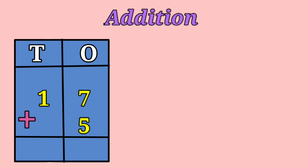Children, which number will stay at 1's place? Number 2 will stay at 1's place. And number 1 will be carried to 10's place. Now in 10's place, we have 1 plus 1. 1 plus 1 will be 2. Therefore, 17 plus 5 equals to 22.